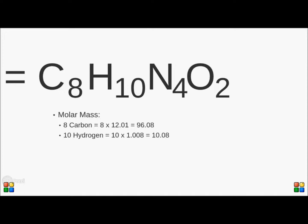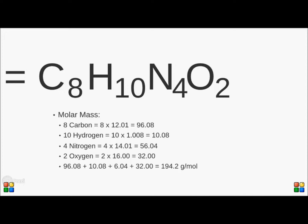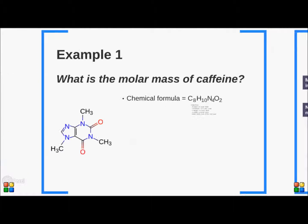We continue doing this with the rest of the atoms in the molecule. So we have 10 hydrogens, which contribute 10.08 AMUs to the molecular mass of caffeine; 4 nitrogens, which contribute 56.04; and 2 oxygens, which contribute 32 AMUs. The molecular mass of caffeine is the sum of each of the constituent components, giving us 194.2 grams per mole. So the molar mass for caffeine is 194.2 grams per mole. If I had 194.2 grams of caffeine, then I would have 1 mole of caffeine.